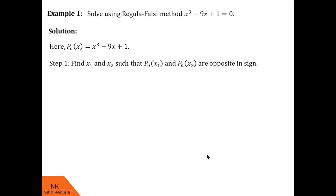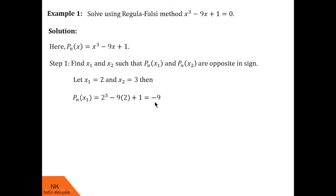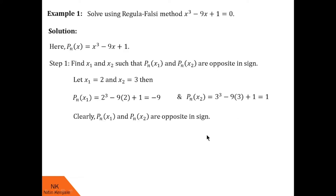This can be done using trial and error — find two nearby integers such that f(x1) and f(x2) are opposite in sign. Choosing integers far apart would require more iterations. So let us choose x1 = 2 and x2 = 3 and substitute these values. We find f(x1) = −9 and f(x2) = 1. Clearly f(x1) is negative and f(x2) is positive, so they are opposite in sign and the solution lies in the interval [2, 3].